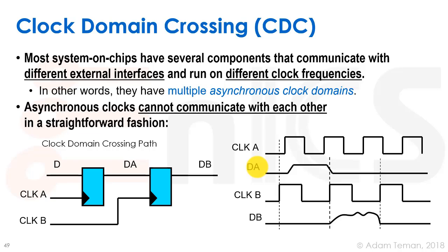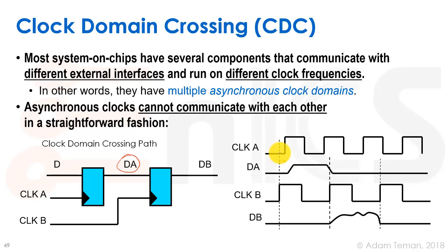It's very important to understand that asynchronous clock domains cannot communicate with each other in a straightforward fashion. As an example, we have two flip-flops — one running on clock A and the other on clock B — with a node in the middle called DA. Clock A runs at one frequency, clock B at a different frequency, and there is some phase difference between each clock edge of these two clocks.